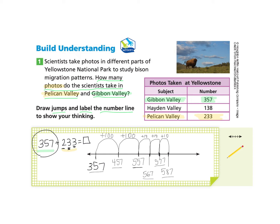Next, we look at the ones column, which has three ones. We make one small jump of three — we don't have to do each individual one. When we add those three, we land on 590 as our final answer. So we can answer that the scientists take 590 photos in Pelican Valley and Gibbon Valley.